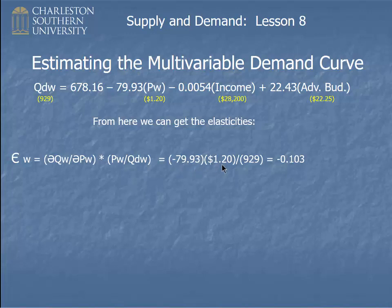then times the value of PW, which was $1.20, divided by the value of QDW, which was $9.29. So, own price elasticity, we get this number, minus 0.103.